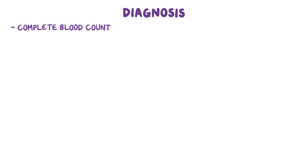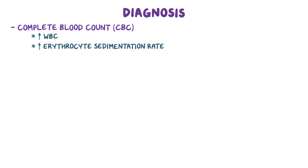Osteomyelitis is usually diagnosed by using a complete blood count, or CBC, which shows an increase in white blood cells, as well as an elevated erythrocyte sedimentation rate, or ESR, and C-reactive protein, or CRP. These are both nonspecific markers of inflammation.